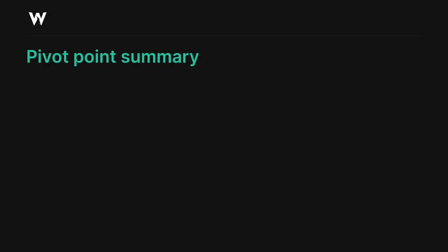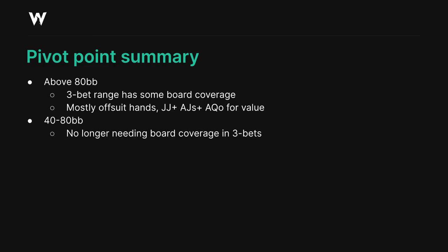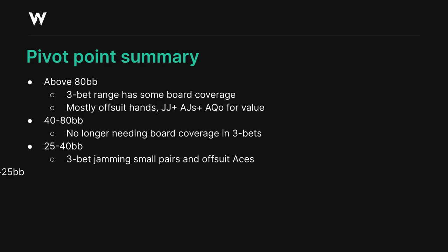To summarize our overall approach at this node, it looks a lot like the small blind's approach to defending against a raise. At deeper stacks, our 3-bet range needs some board coverage, but not a ton — we're still primarily 3-bet bluffing with offsuit hands. As we get shallower, we move away from wanting board coverage in our 3-bets and towards prioritizing blockers, while we begin jamming small pairs and some offsuit aces as we hit the second pivot point. Once we get even shallower, we continue jamming at a high rate, but we now start to benefit from calling and playing post-flop with hands like 7s and king-queen suited, since the villain's raising range is very polarized.